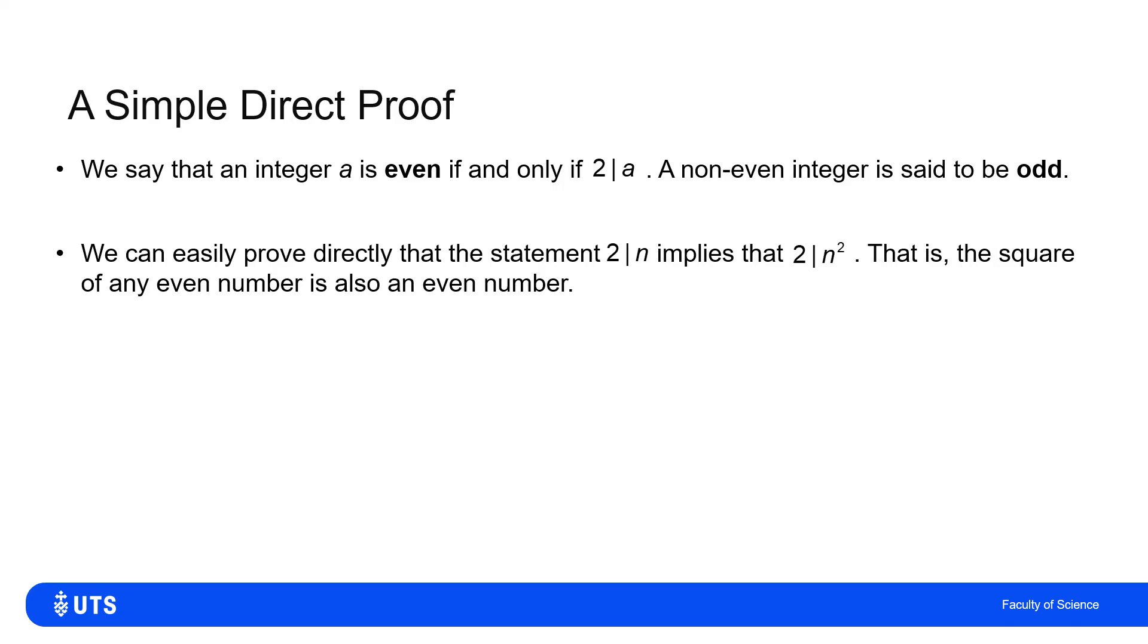So the statement that we want to prove here is that two divides n implies that two also divides n squared. That says that if I pick an even integer, that its square is an even integer. With all of these proofs, it's always worth just writing down exactly what information the information that we're given tells us. Well, we're told that two divides n. That's our starting premise. Now, because we know that two divides n, we know that there is a number half as big as n called s, which is an integer such that two s equals n.